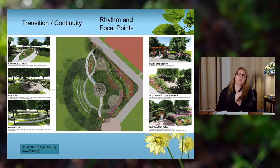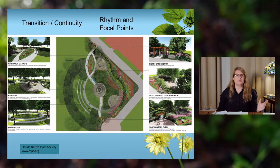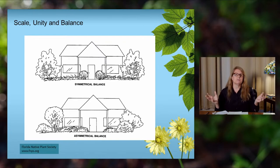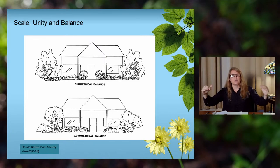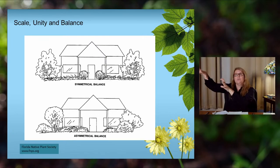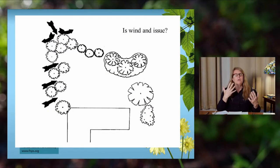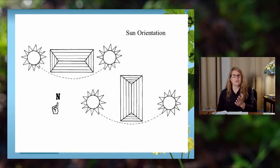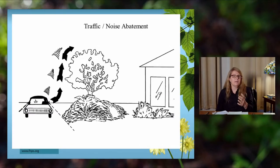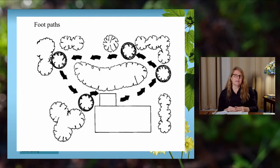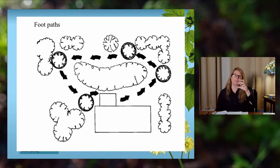A landscape plan can show curved walkways — an amphitheater to the left and a garden to the right — showing transitions between spaces. You can have symmetrically balanced plant materials looking exactly alike on either side of a house, or asymmetrical balance with two large shrubs and one small one. Also consider whether wind is an issue — you may want to block that. Consider sun orientation for energy efficiency, and traffic and noise abatement — a little earth berm with shrubs on top can block some noise. For a residential landscape, plan your footpaths first and then plant around them.